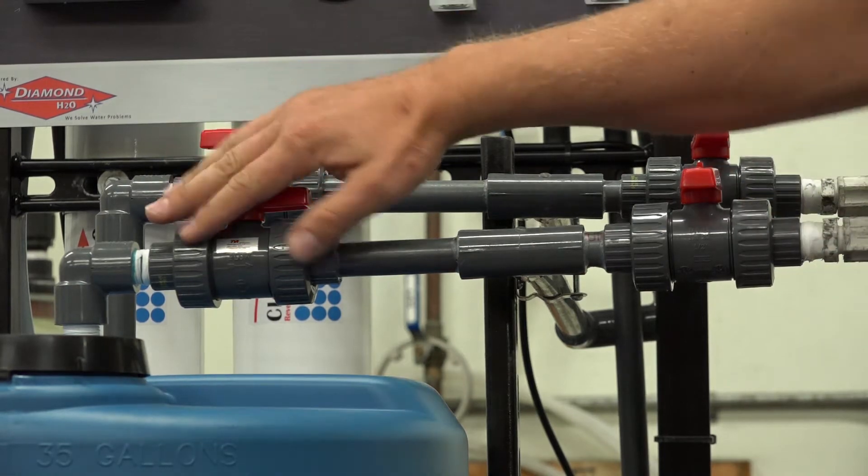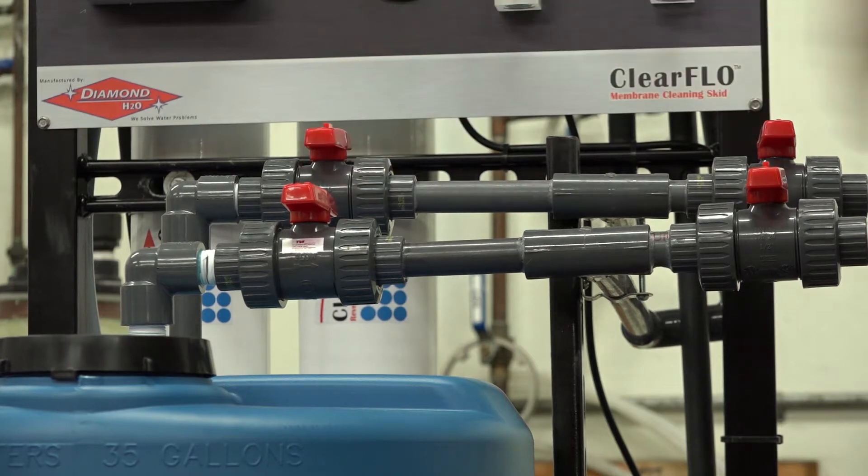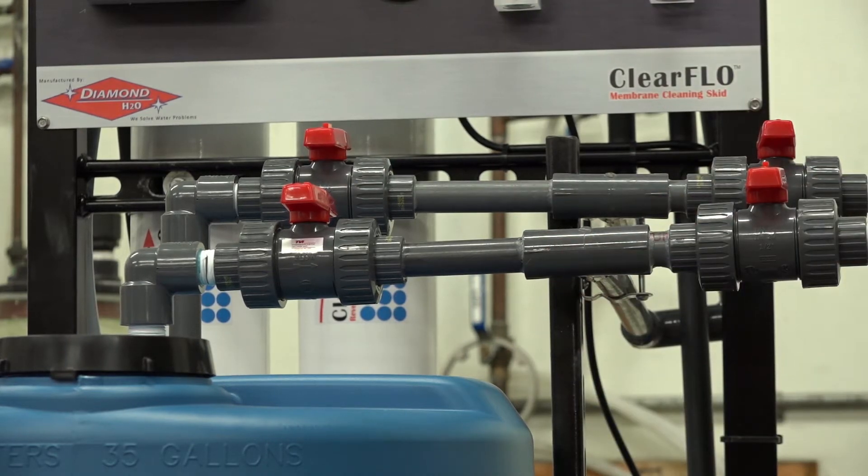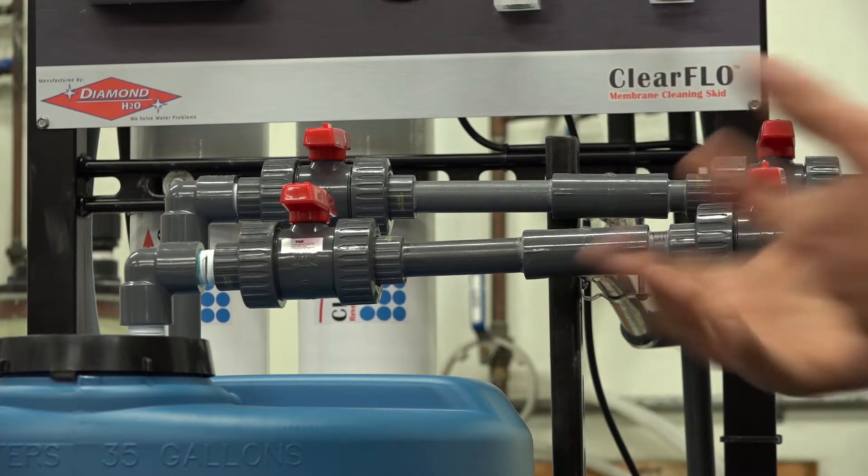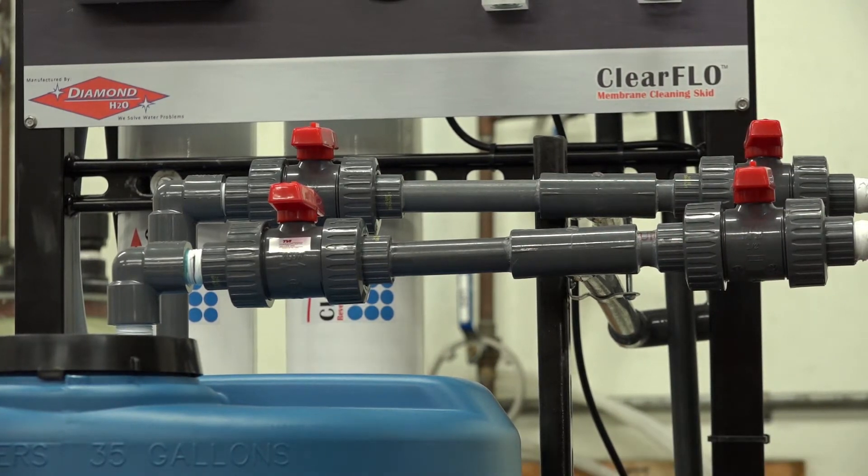The way that it works is using the chemical, you'll add the five gallons of chemical that you received. Actually, you have ten gallons coming, but start with five. You'll add the five gallons of chemical to the tank.